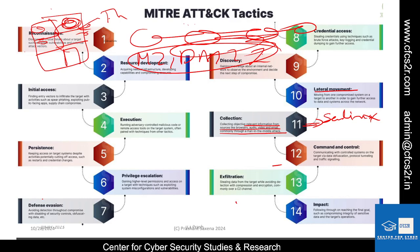In this collection phase, the attacker will find out what is sensitive and what can be taken easily, because data exfiltration is also a part of the process — he needs to send the data to his C2 IP. He can capture audio and video, capture entire data, and install keyloggers and screen captures — all these things can be done.